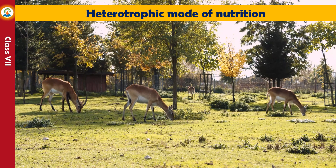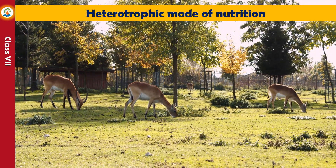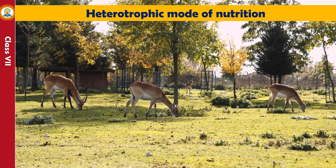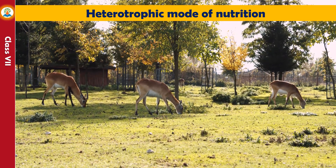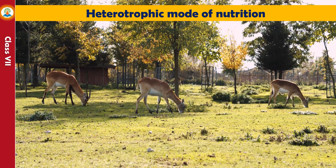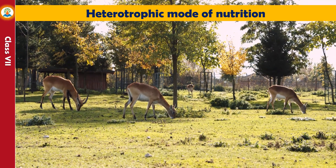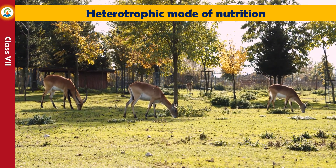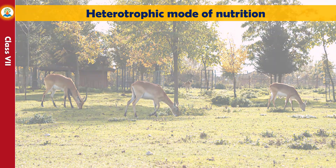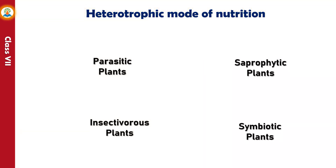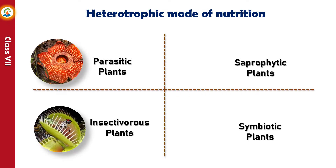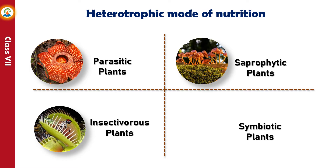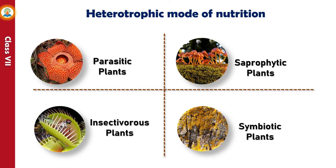Some living organisms depend on other living organisms for food. These organisms have heterotrophic mode of nutrition and are called heterotrophs. All animals including humans, and plants that cannot carry out photosynthesis, are heterotrophs. Different types of heterotrophic plants include: parasitic plants, insectivorous plants, saprophytic plants, and symbiotic plants.